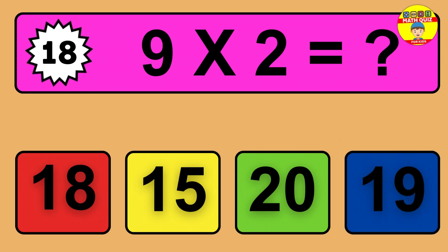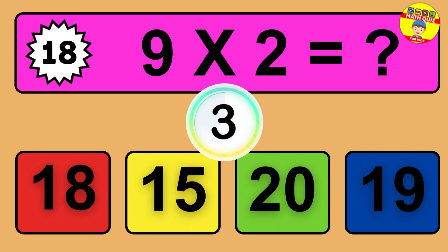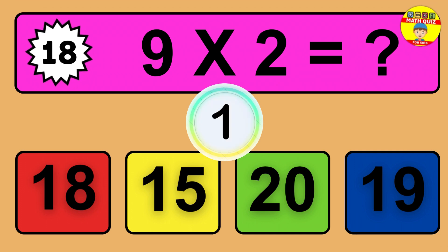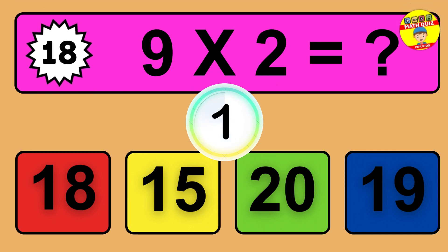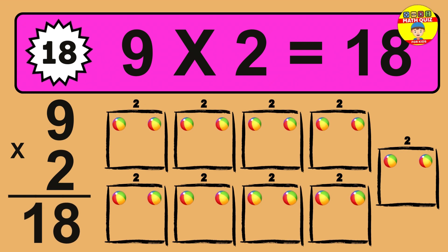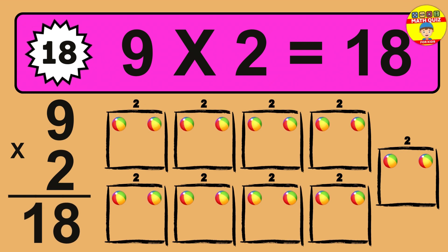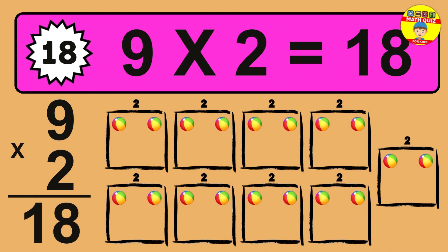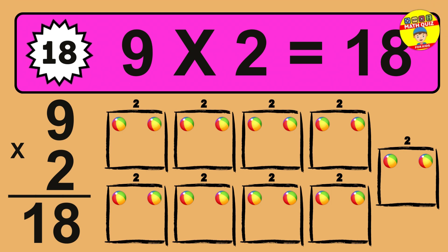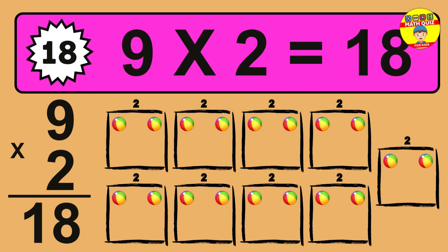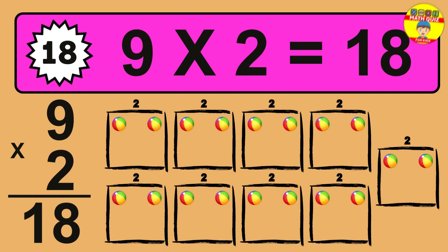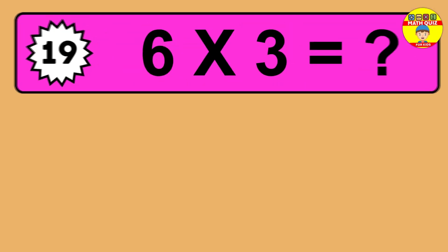Question 18. 9 times 2 equals what? The answer is 9 times 2 is 18. To calculate, we have 9 groups with 2 balls each one. So how many balls do we have? 18 balls.